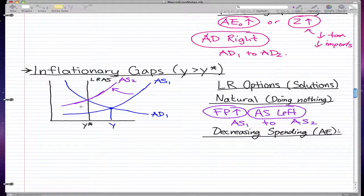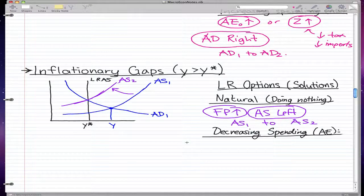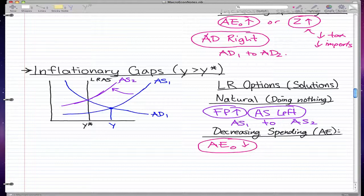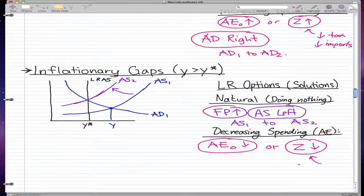LRAS is equal to AS is equal to AD. The second way of fixing this inflationary gap is by decreasing spending, and that is the same as our recessionary gap, just the opposite. We could decrease AE - here we increase, now the inflationary gap we decrease. So, decrease AE or decrease the marginal propensity to spend, and we could do this by increasing taxes or increasing imports.